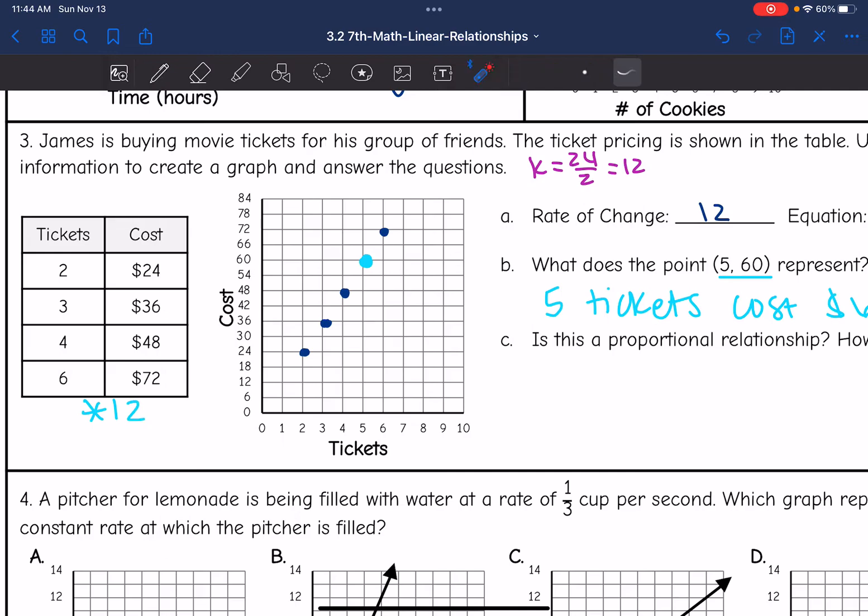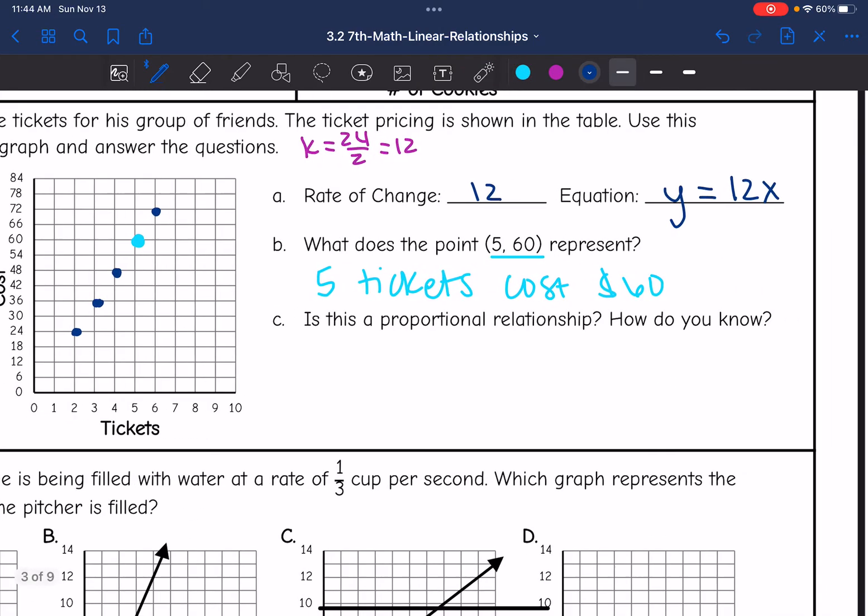Another way I would know is if the graph goes through the origin, if it goes through 0, 0. And if I extended this line, if I followed the pattern, it would go through the origin, meaning 0 tickets would cost $0.